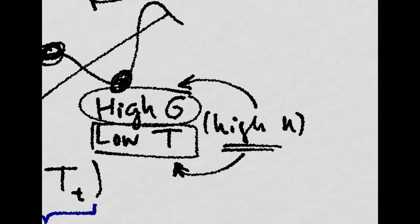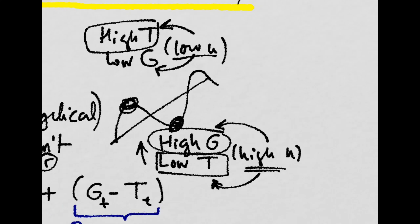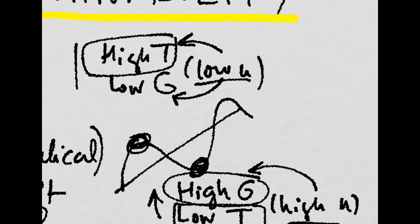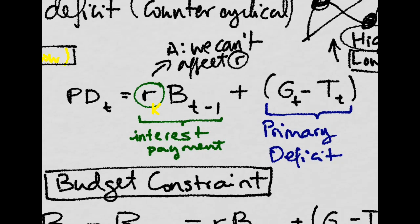So when we are in a crisis, public deficit goes up. And when we are at a boom, the public deficit goes down. So it's counter-cyclical. Public deficit looks something like this.